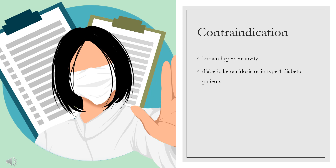Contraindication. Exenotide is contraindicated in patients with a known hypersensitivity to any component of the drug or formulation. This medication should not be used for the treatment of diabetic ketoacidosis or in type 1 diabetic patients.